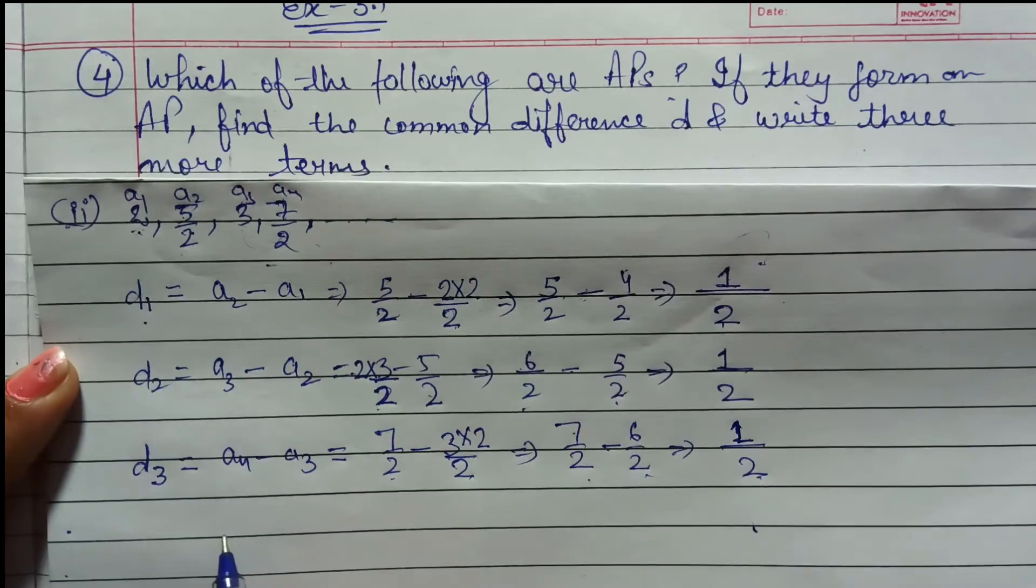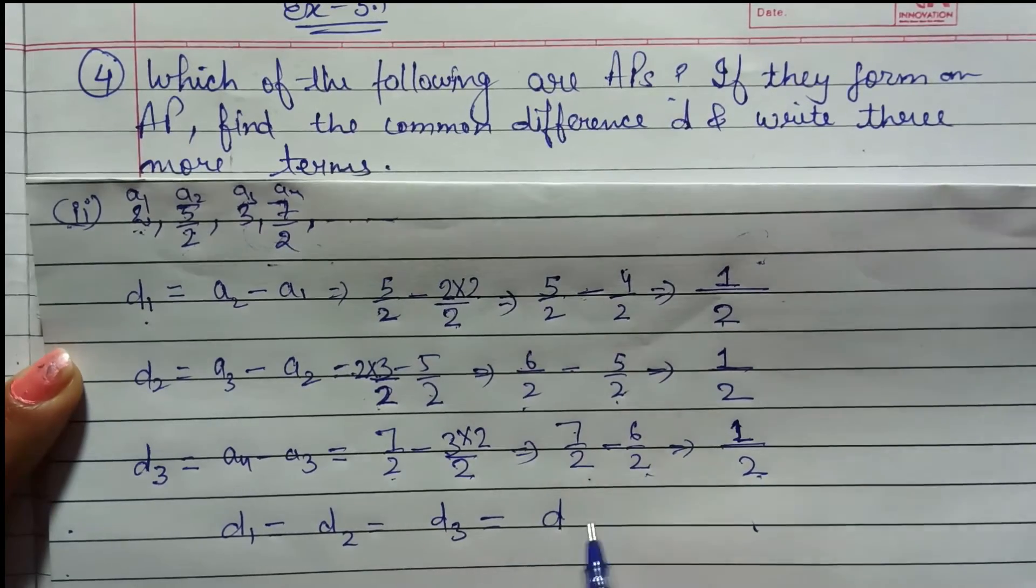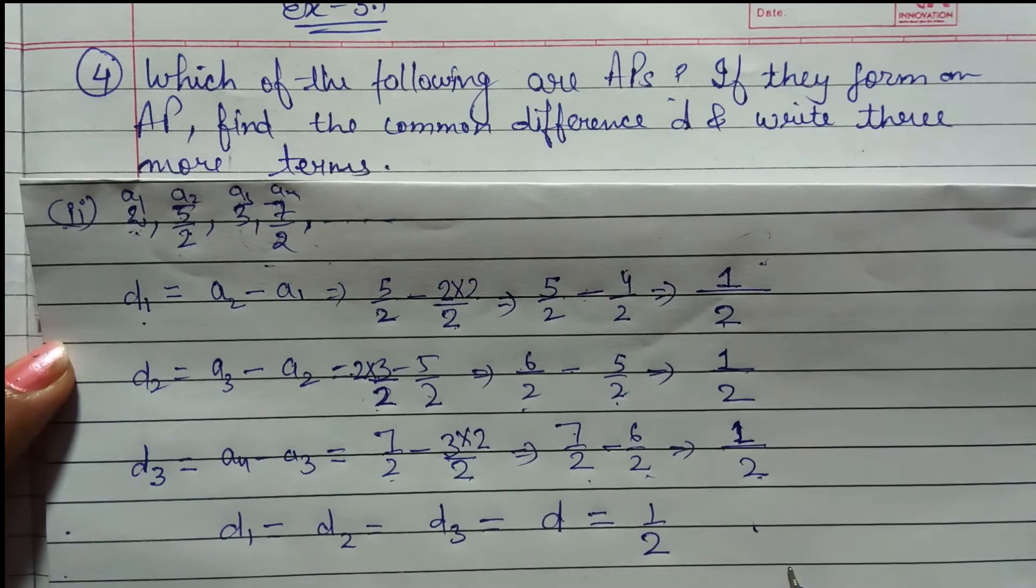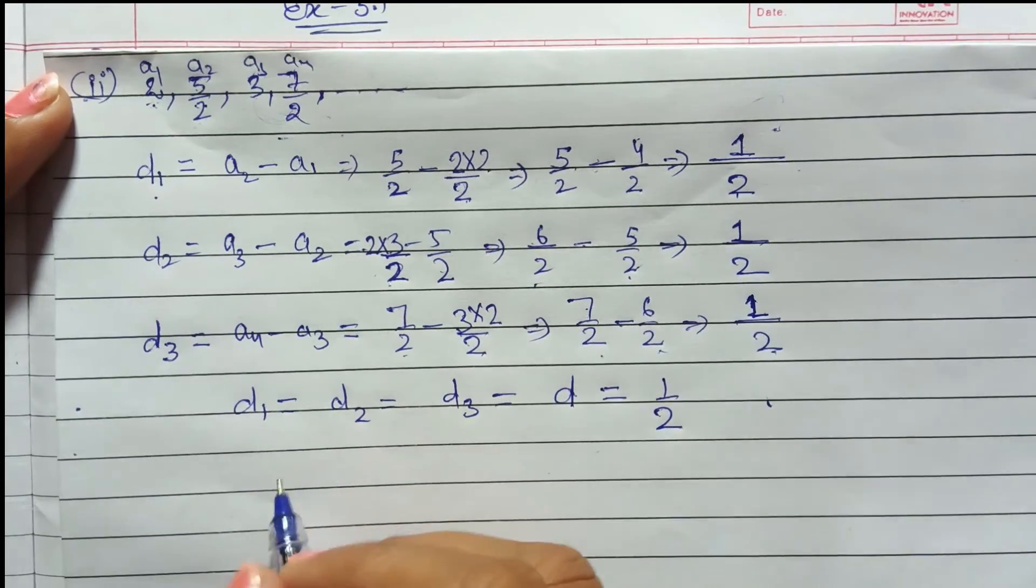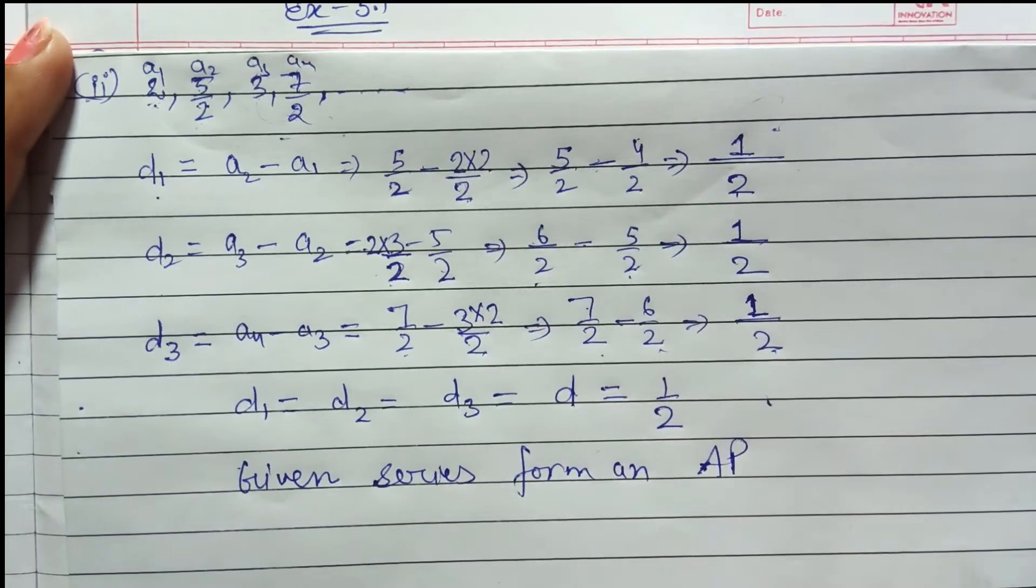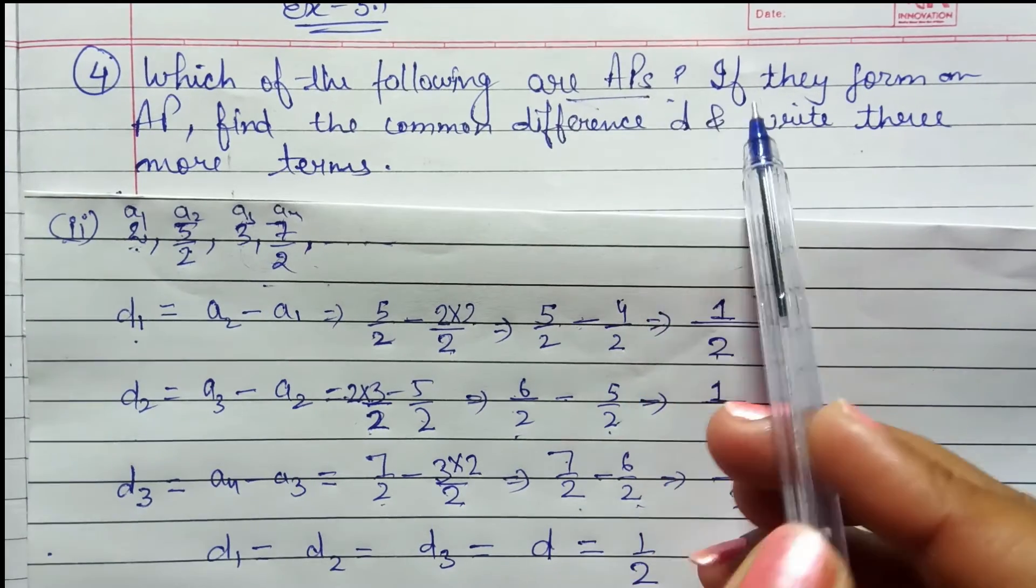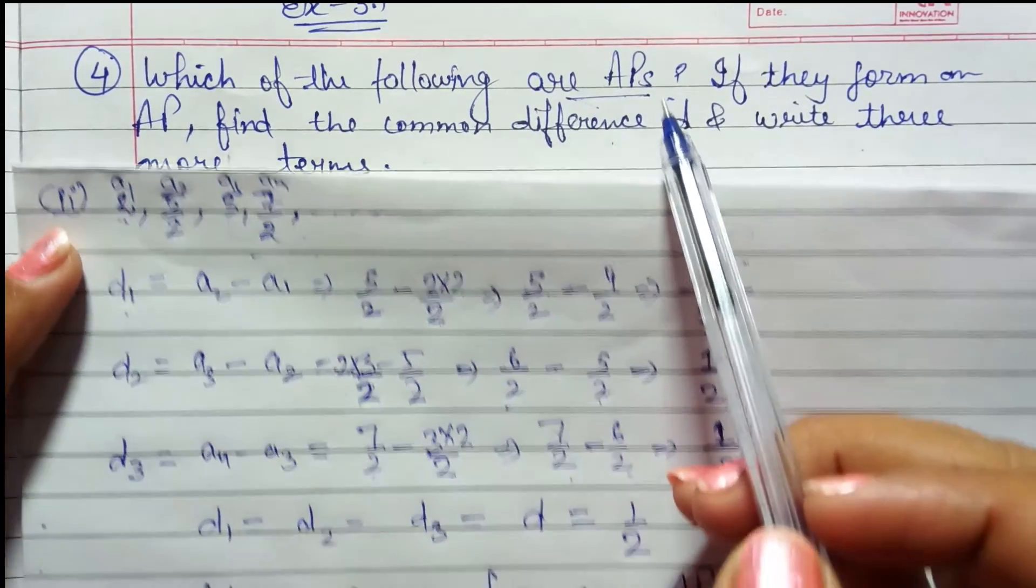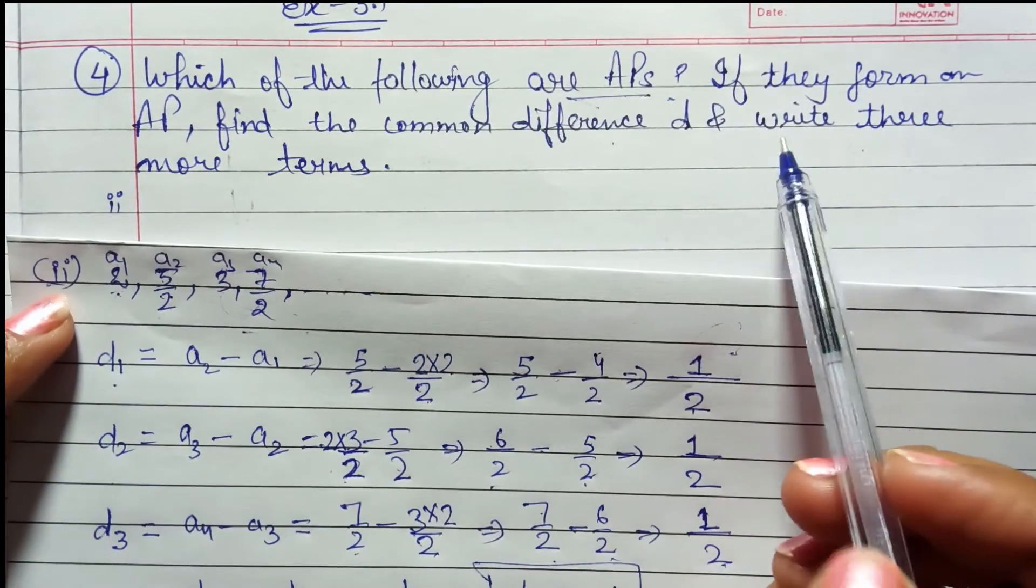So here we can write D1 equals to D2 equals to D3 equals to D, equals to 1 by 2. Consecutive terms of difference is equal. So that's why we can write a given series forms an AP. We have checked that yes this is AP. If they form an AP find the common difference D. Common difference what is D? We have checked that D is 1 by 2.